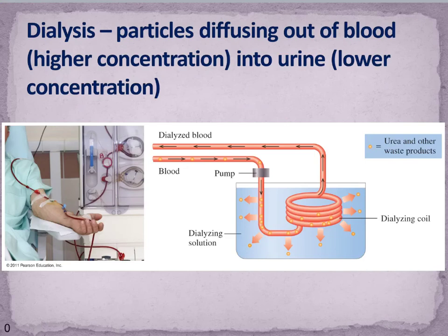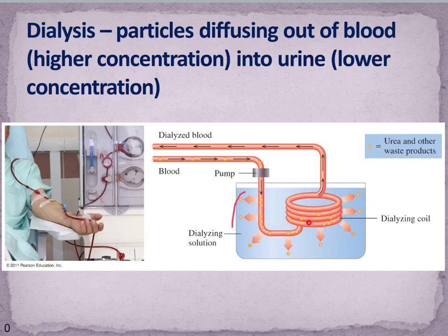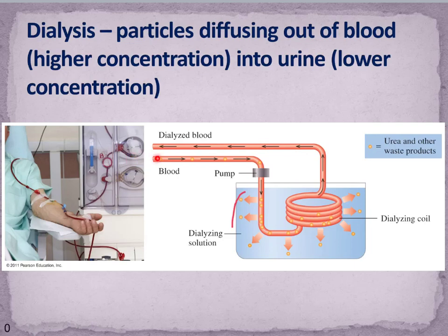Our kidneys are actually doing dialysis all the time. Particles are diffusing out of the blood — the contaminants that are carried to the kidneys are at high concentration and are moved into the urine that has a lower concentration of those particles. If our kidneys are not functioning and this cleaning process isn't happening, then we have to undergo kidney dialysis. We transport the blood out of the body through tubes, it goes through the dialysis machine, and the solution inside behaves just as our kidneys would. Instead of going from our kidneys into the urine, particles move from our blood running through the dialysis tubing into the dialyzing solution. When the blood goes back into the body, the concentration of particles is much lower, and as a result we have cleaned our blood. How many times a week you have to do this depends on how good or bad your kidney function is.